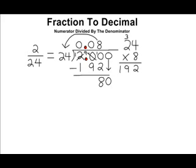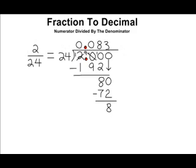And 24 can be divided into 80 a total of 3 times. The product of 3 and 24 is 72 and the difference of 80 and 72 is 8. Now as you can see we still have a remainder. In this case we're just going to round to the nearest hundredths place. Now in the hundredths place is the number 8 and if we look next door the number 3 is not large enough for us to round up so we just keep the 8 as it is. So we're going to round this to 8 hundredths.